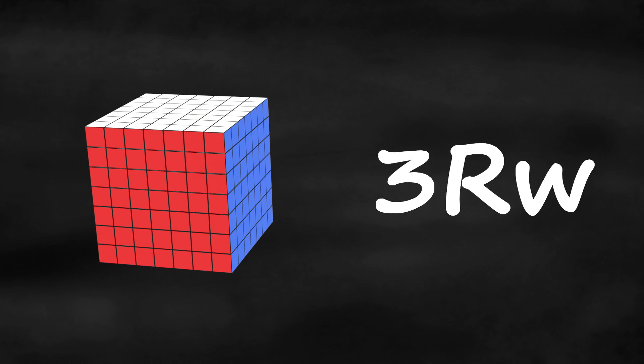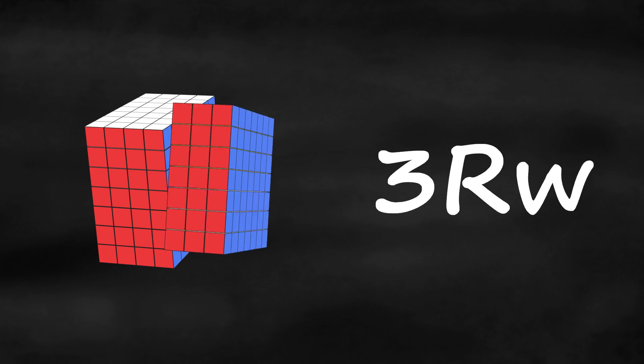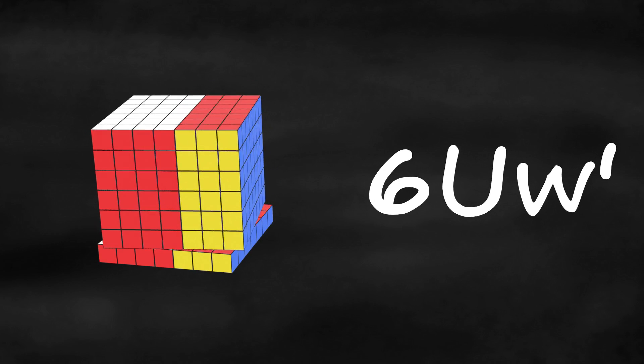If you want to turn multiple inner layers together, you add the number of layers to the beginning of the letter. If it's a 3, you count 3 layers in and move it all together. 3rw looks like this, 6uw' looks like this.